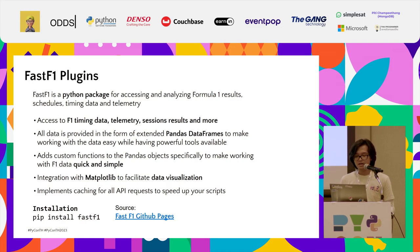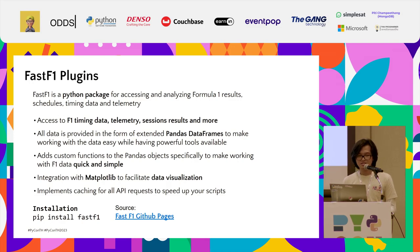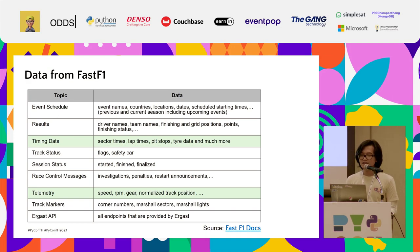FastF1 is also integrated with matplotlib, which we all use for visualization. Because one race's data is large — loading one race gives you about 200 to 300 megabytes — FastF1 provides caching, so you don't have to re-download the data every time. It's also easy to install: just run pip install fastf1.